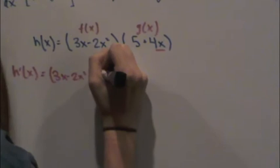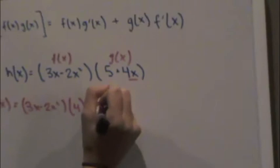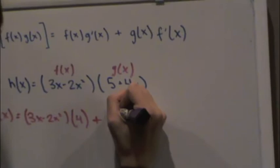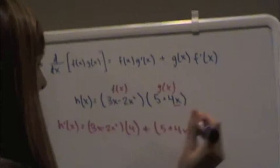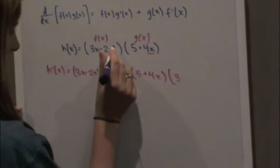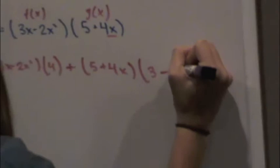And then, now you're going to flip-flop. Now you do g(x), which is 5 plus 4x times the derivative of f(x). This becomes 3 using the exponent rule, and this is 4x, which you find using the constant multiple rule.